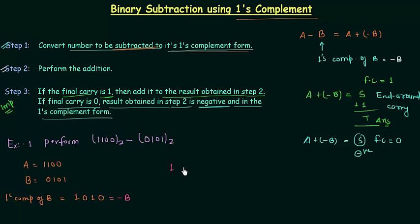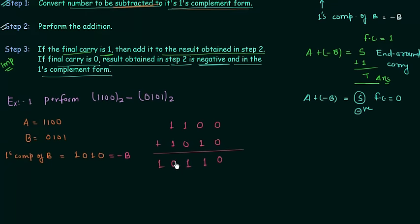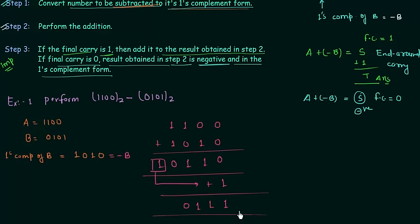So we will do the addition quickly: 1100 plus 1010. Zero plus zero is zero, zero plus one is one, one plus zero is one, one plus one gives sum equal to zero and carry equal to one. So you can see the final carry is one, and when the final carry is one we have to add it back to the result obtained in step number two. So we add one here and we get 0111 as the answer of example number one.